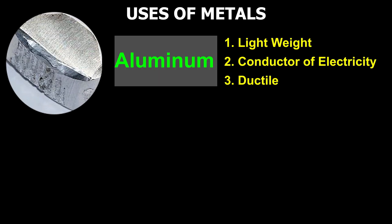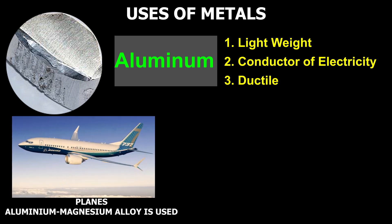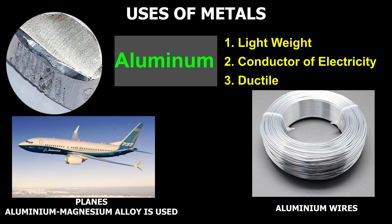Aluminum is lightweight and used in aerospace industries. In planes, aluminum is used in the form of an alloy of magnesium. Aluminum is also a good conductor of electricity and it is ductile too, thus it is used in making cables and wires.